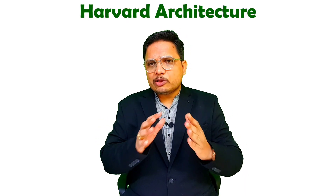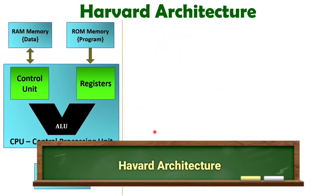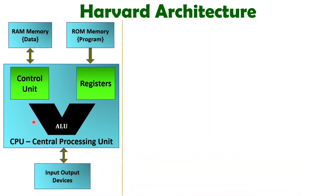Let me explain all those things with a block diagram for more clarity. When we talk about Harvard Architecture, this is the CPU that will be accessing program memory as well as data memory. Program is stored in ROM because we cannot change the program — we will be just reading it from memory. And with RAM, we have data, so here we will be performing two things: read and write.